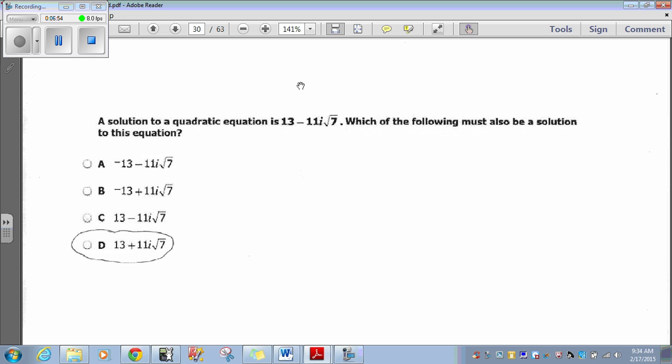A solution to the quadratic equation is 13 minus 11i radical 7. Which of the following must also be a solution to this equation? Now, remember, when you're using quadratic equation, you get plus or minus. So, you're going to have two answers. So, if this is 13 minus 11i radical 7, the obvious choice is going to be 13 plus 11i radical 7 to account for the two answers. Plus and minus. All right. D.